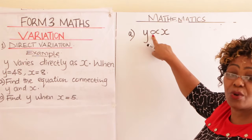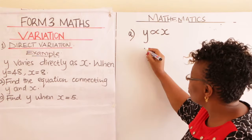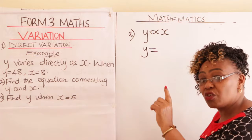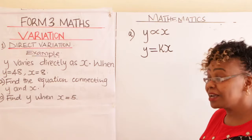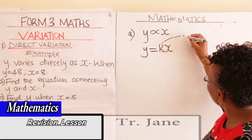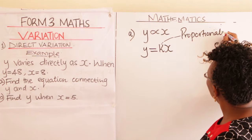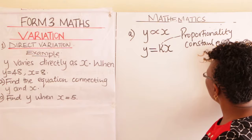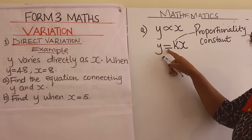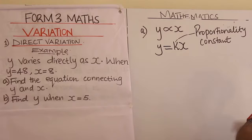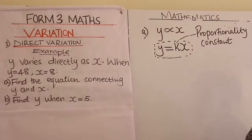The second step, learner, is to introduce an equal sign here — replace your proportionality sign with equal to. So you write Y is equal to. Once you replace with equal to, you introduce what we call K, and let it multiply the other quantity. So K times X gives us KX. This letter K is called a proportionality constant. Once you introduce the proportionality symbol, the second step is to replace it with equal to, and then multiply that quantity by K.